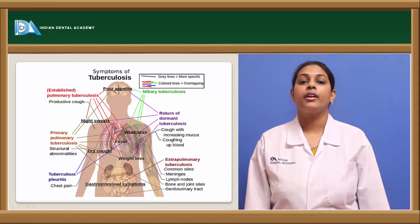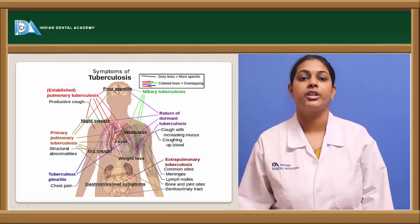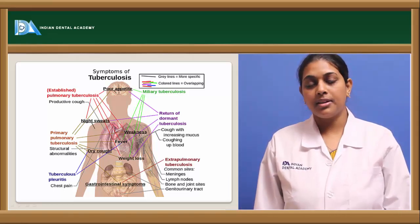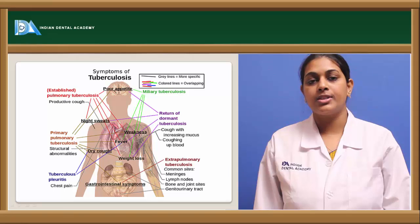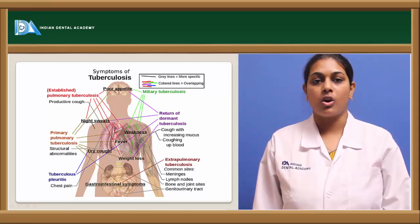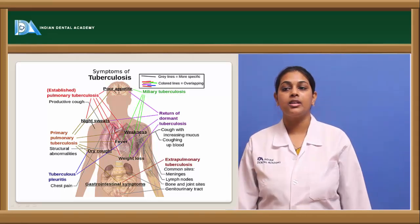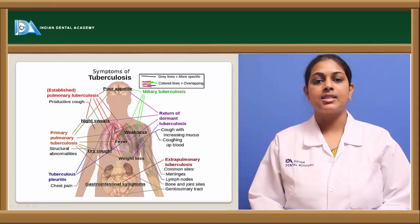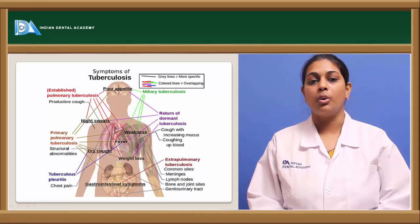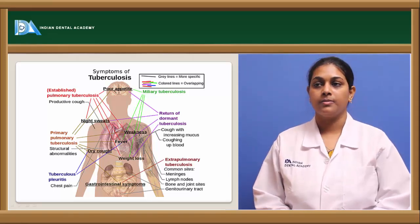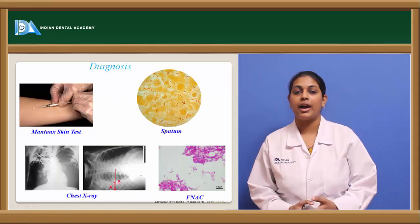When tuberculosis involves the brain, it may cause brain tuberculosis. When it involves the pleura, it may cause chest pain. These are certain symptoms seen in tuberculosis.